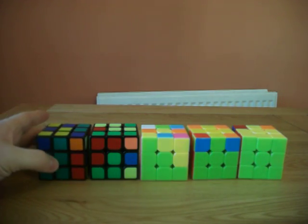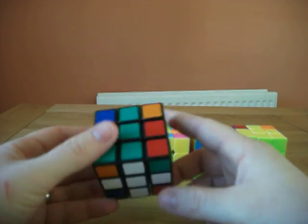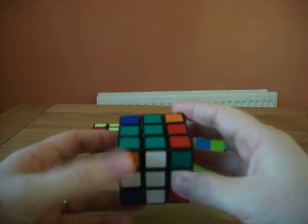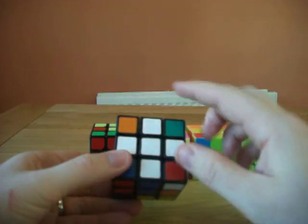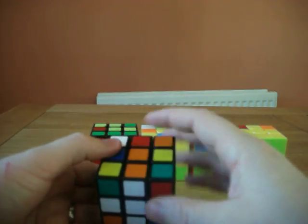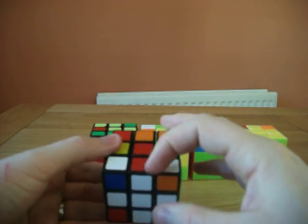The steps look like this. The first thing you do is solve edges on one side, making a cross shape like this. All the edges here are on a cross, and they match the corresponding sides.